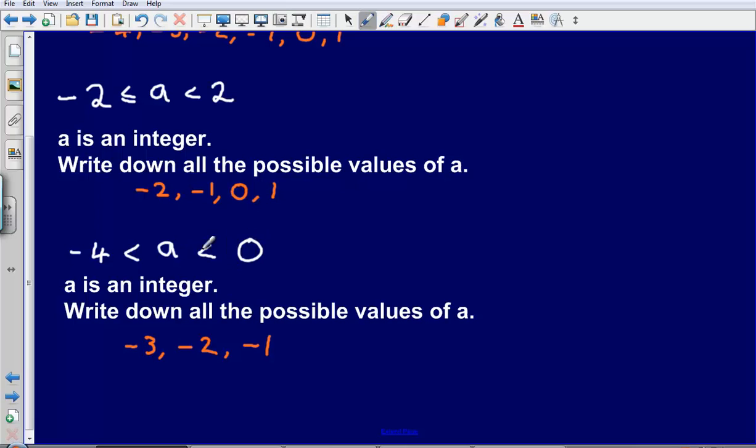However, it cannot be 0, because we're told that a is smaller than 0. As I said, if we have that line underneath, it could be 0, but we haven't, so it can't be.